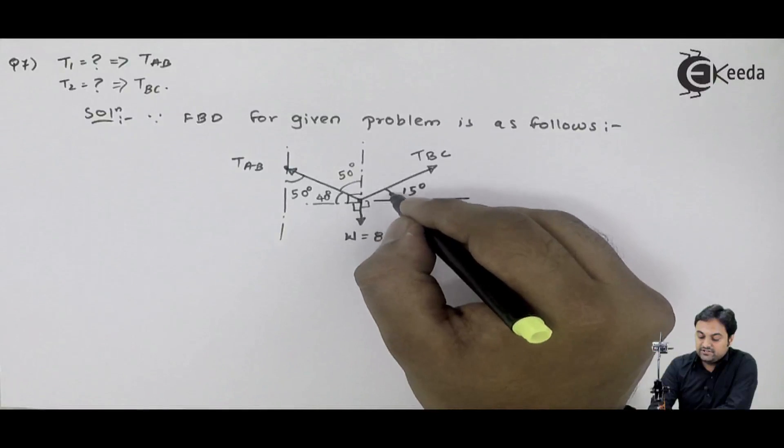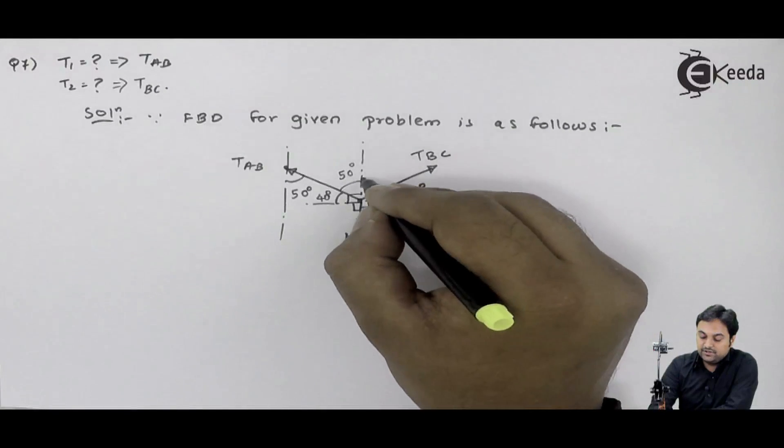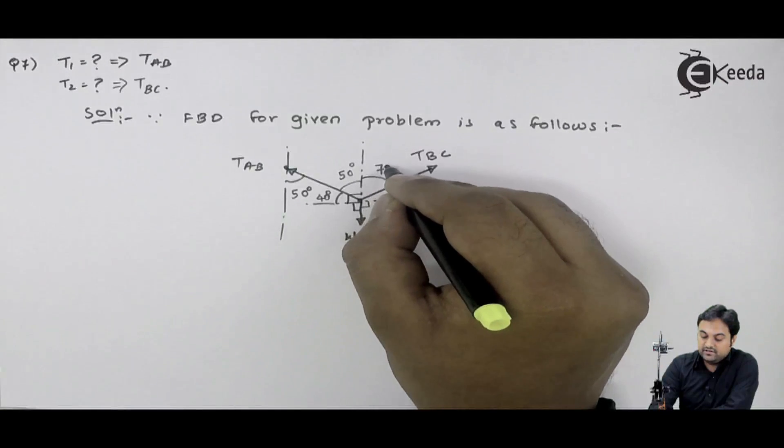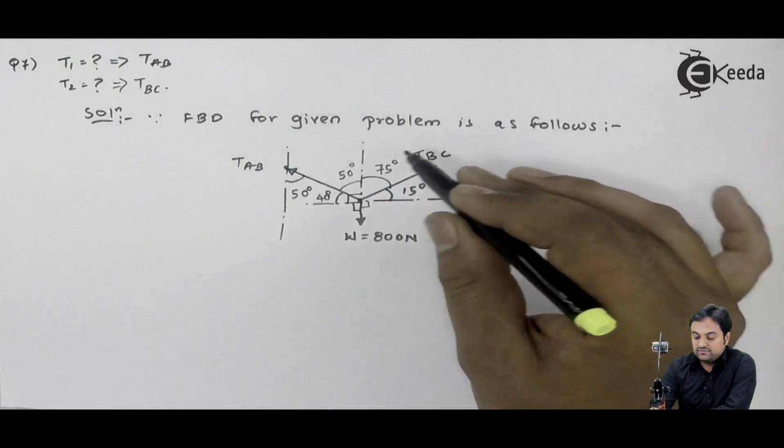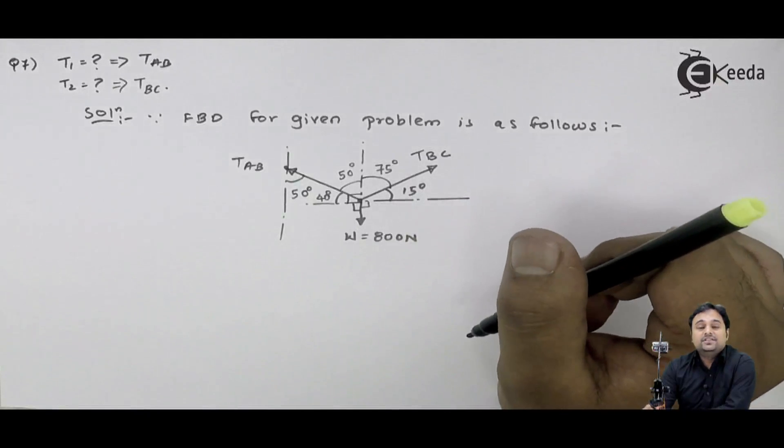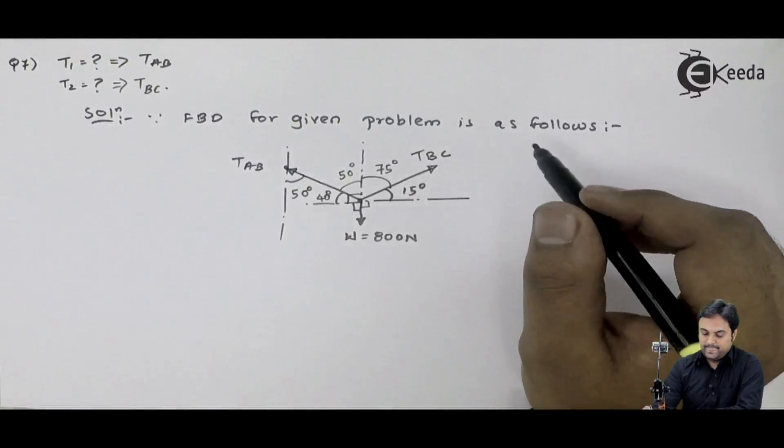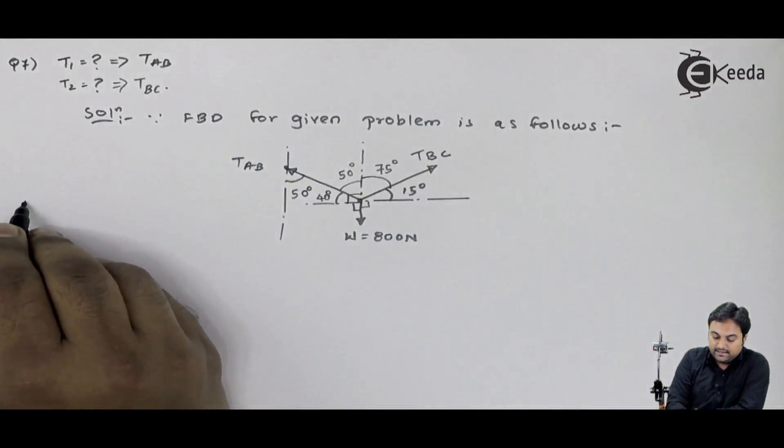Next, 15 degree is here, complete is 90, so the remaining portion is 75 degree. In other words, I have marked all the forces with the angles. Now I can easily apply Lami's theorem. I can say that by Lami's theorem,